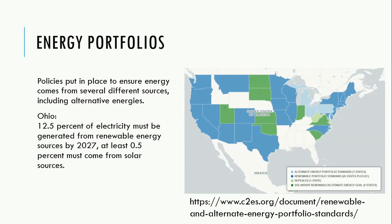Energy portfolios are policies put in place by state and federal governments to ensure that energy comes from several different sources, including alternative energies. For example, in Ohio, the energy portfolio policies state that 12.5% of electricity generated in the state must be from renewable energy by 2027, and half a percentage point of that must come from solar sources. In most states, there are financial incentives and reimbursement programs to award homeowners and companies that install and use alternative energy systems.